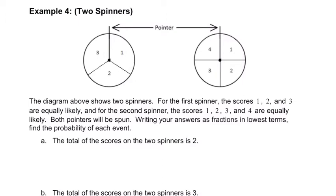First event: the total of the scores on the two spinners is 2. The only way for that to happen is if we get a 1 and a 1. So there's a 1 out of 3 chance on the first spinner, a 1 out of 4 chance on the second spinner, so there's a 1 out of 12 chance of that happening altogether.